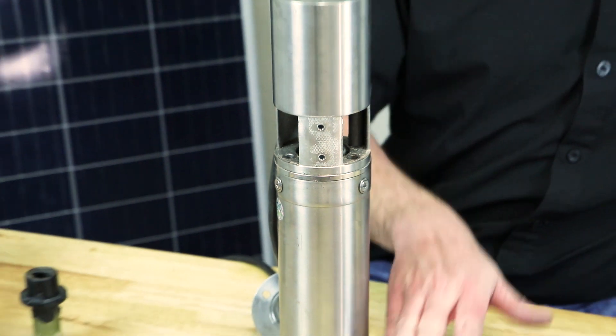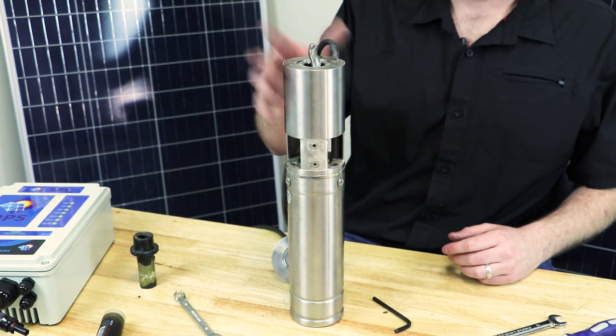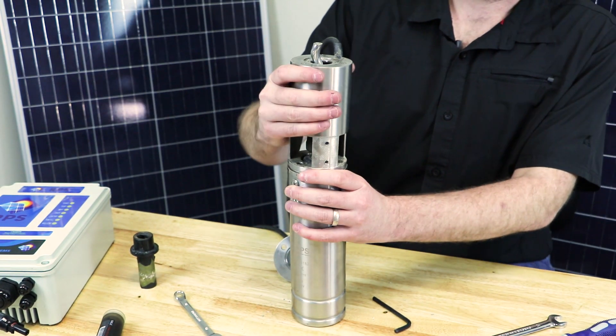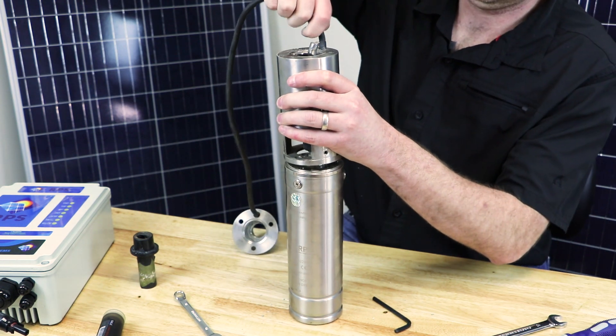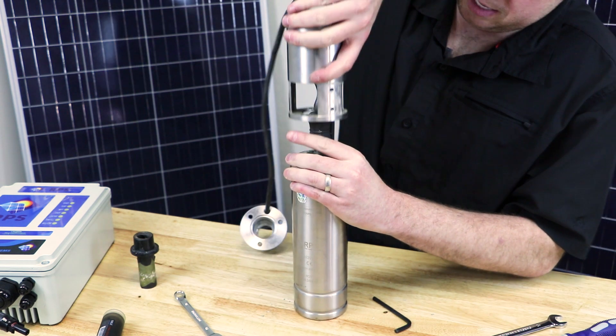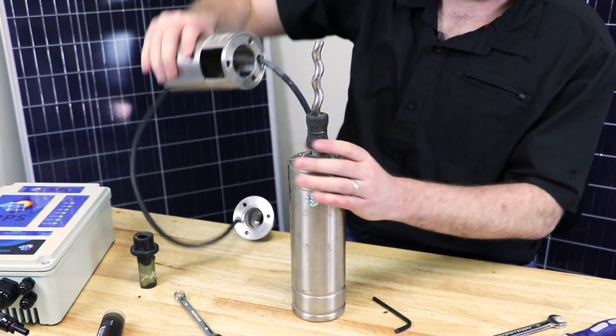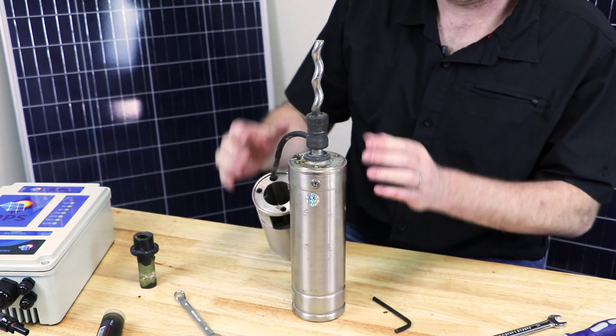With our three allen head bolts off, now we can remove the top pumping portion. Slide it up and expose the rotor of the helical pumping mechanism.